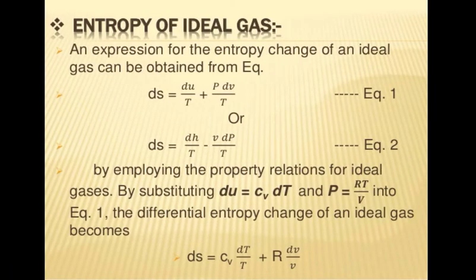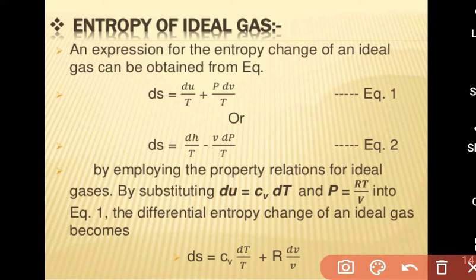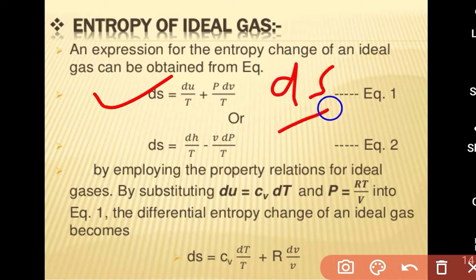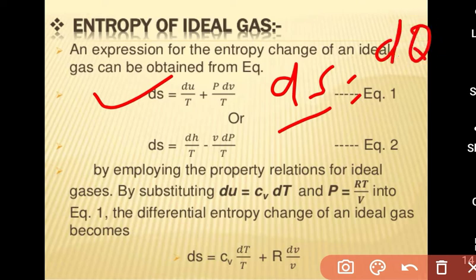Entropy of an ideal gas: the entropy change for an ideal gas can be obtained from the equation dS = dQ / T, where dQ = dU + p dV. After separating, we get dS = dU / T + p dV / T.